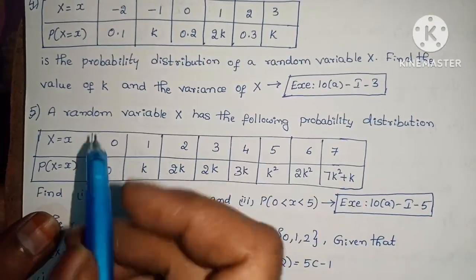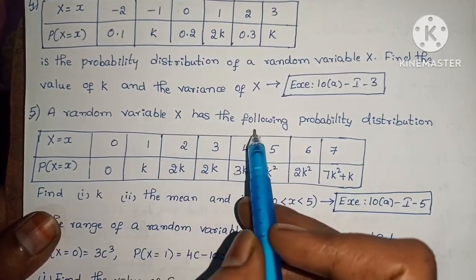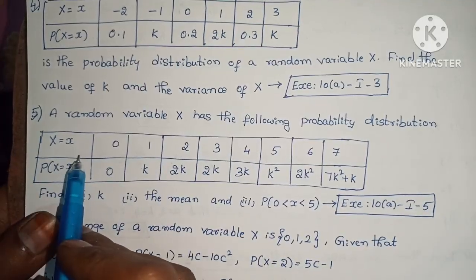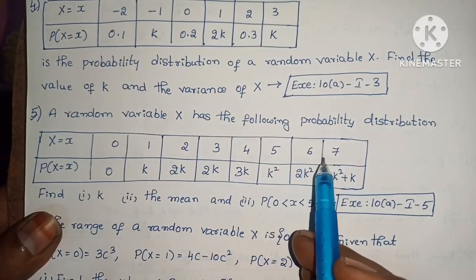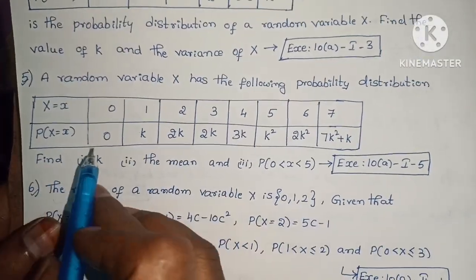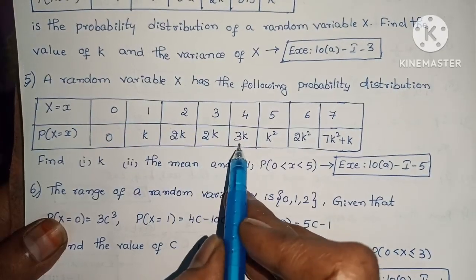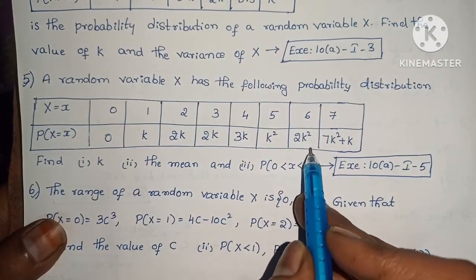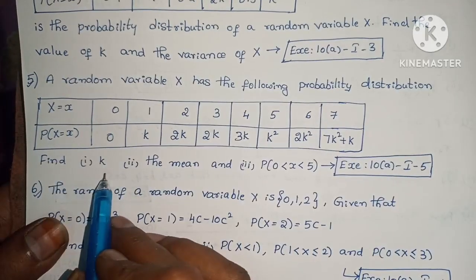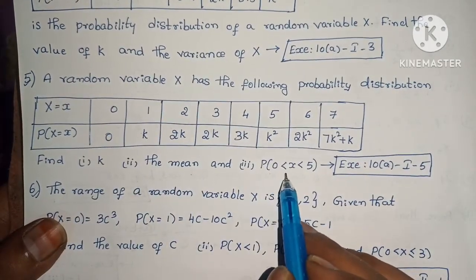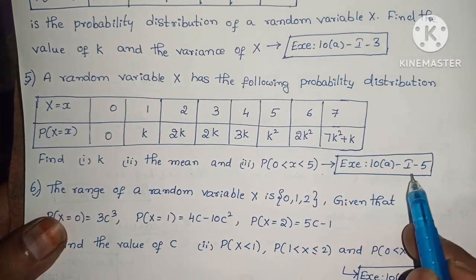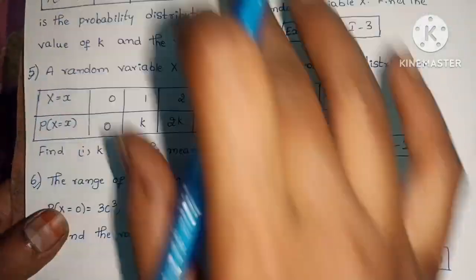A random variable x has the following probability distribution: x = 0, 1, 2, 3, 4, 5, 6, 7 with P(x) = 0, k, 2k, 2k, 3k, k², 2k², 7k²+k. Find k, the mean, and P(0 < x < 5). Exercise 10, Section I, problem 5.